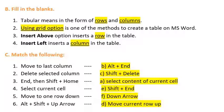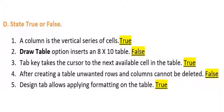State true or false. First one: a column is the vertical series of cells — this statement is true. A column has a vertical series of cells. Second one: draw table option inserts an 8x10 table — this statement is false, because we can design the table manually.